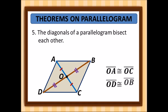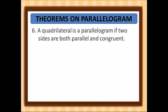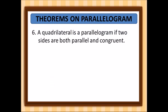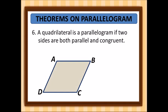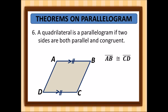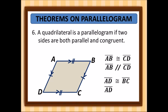The next theorem: a quadrilateral is a parallelogram if two sides are both parallel and congruent. The symbols indicate the sides are parallel and congruent. So AB is congruent to CD and AB is parallel to CD. Also, AD is congruent to BC and AD is parallel to BC.